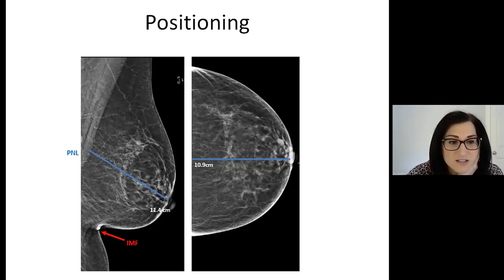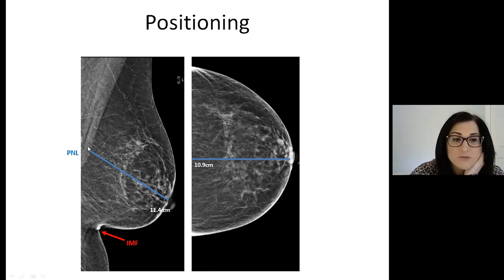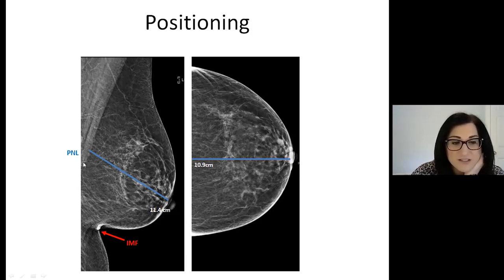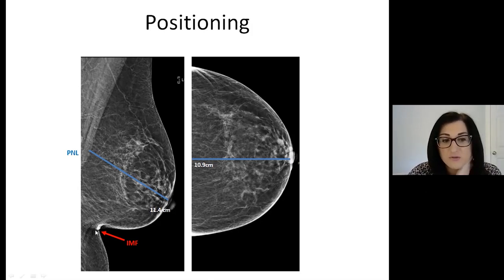This is some imaging to discuss positioning. This is the pectoralis muscle here, this is the nipple, and this is the posterior nipple line. To make sure you've got adequate tissue on both the CC and the MLO, you want to make sure that the posterior nipple line on the MLO and the CC is within one centimeter, as it is on this. The pectoralis muscle is coming down below the PNL, which is great. You can also see a nice convex positioning. The inframammary fold is here — it is visualized and open, a nice obtuse angle — and this is appropriate positioning.